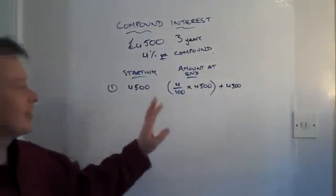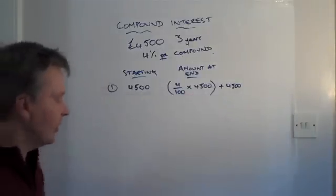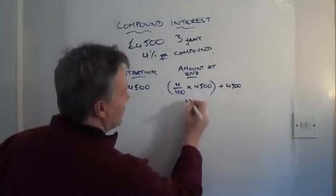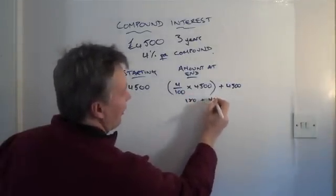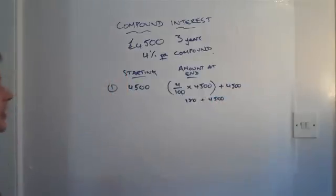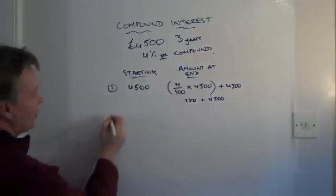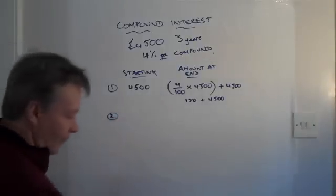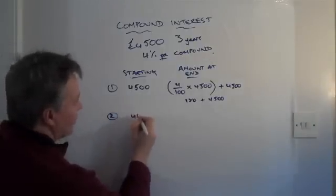So his total amount is 4 over 100 of £4,500 plus £4,500. So his total amount at the end of the first year, if you calculate that through, is £180 plus £4,500. So at the end of the first year Joe now has got £4,680.